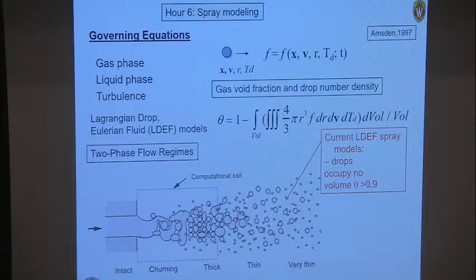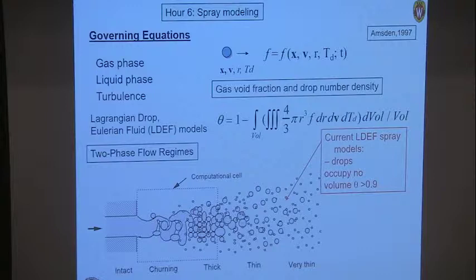There are CFD code vendors who say they'll use adaptive mesh refinement and refine the mesh down to the order of the injector diameter, and they violate this assumption. This is unfortunate because the equations they solve still make this assumption, and that's an uncertainty in many codes you find these days.